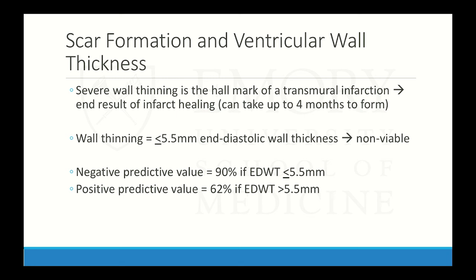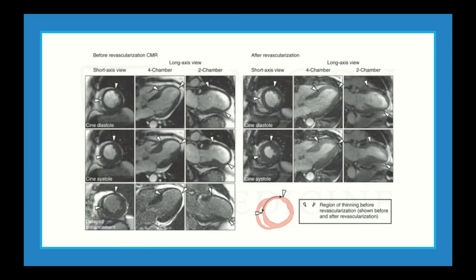When looking at scar formation in the ventricular wall, severe wall thinning is the end product after a transmural infarction and can take up to four months to fully develop. Wall thinning less than 5.5 millimeters in end-diastole is considered non-viable, with a negative predictive value of about 90% but only a 62% positive predictive value if greater than 5.5 mm. An example patient had wall thinning in the anteroseptal, apical, and anterior wall with subendocardial enhancement; after revascularization, there was an increase in contractility and reversal of myocardial thinning.